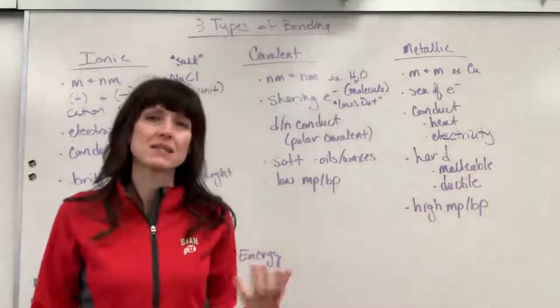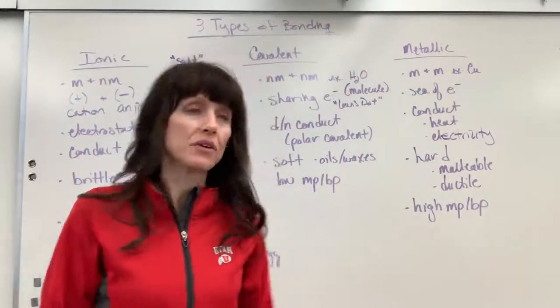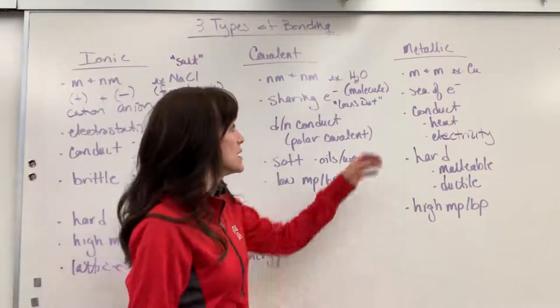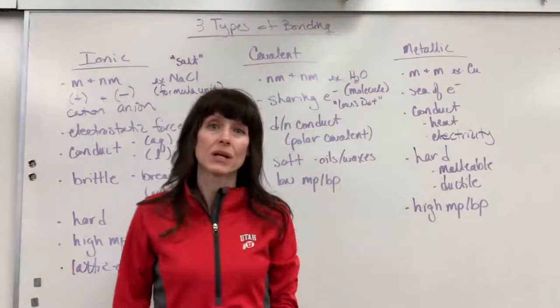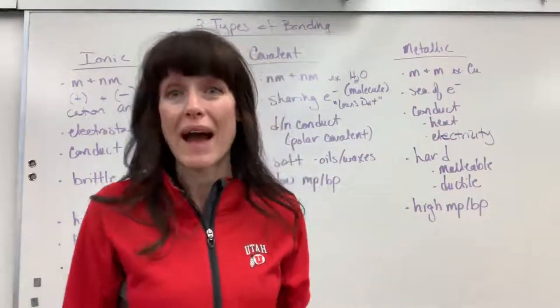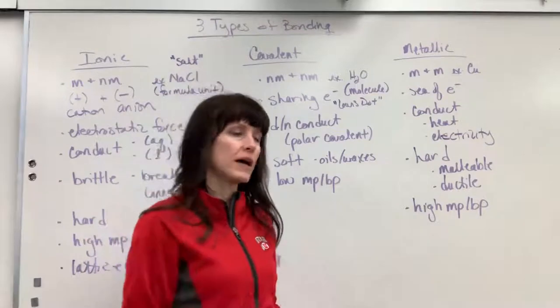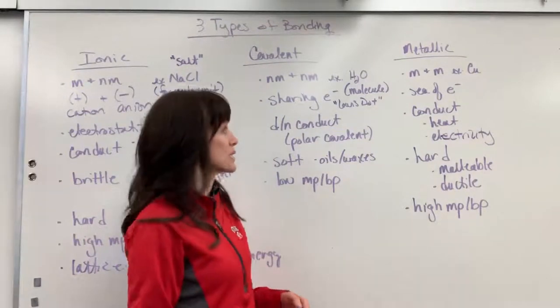Okay, metallic bonds. This is the last major type of bonding that you'll learn in a first year chemistry class is between metals and metals. So an example here would be pure copper. We can also have alloys. I'll talk about that in different videos for you. You can look that up.